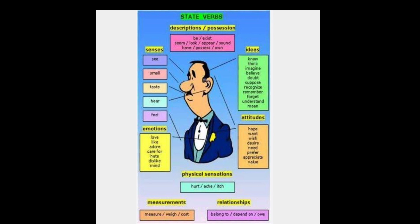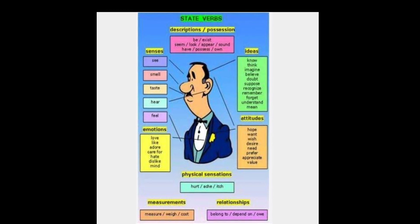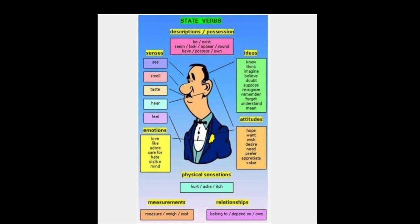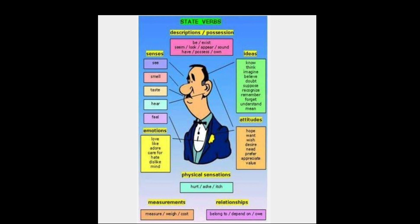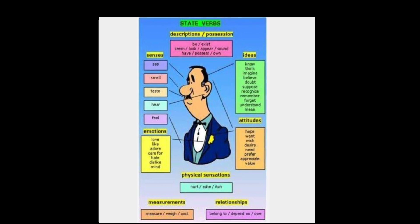Some Stative Verbs show senses like: smell, taste, hear, and feel. Some Stative Verbs show emotions like: love, like, hate, adore, etc. Some Stative Verbs show ideas like: know, think, imagine, etc.